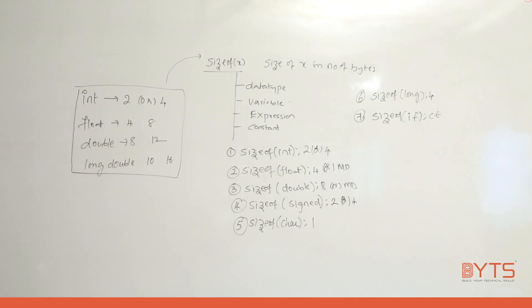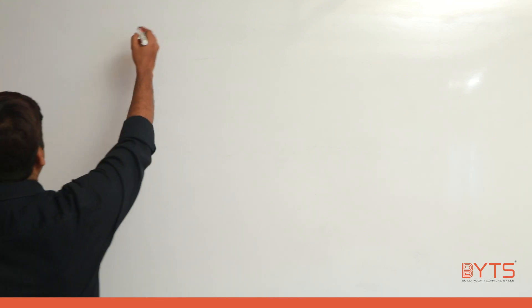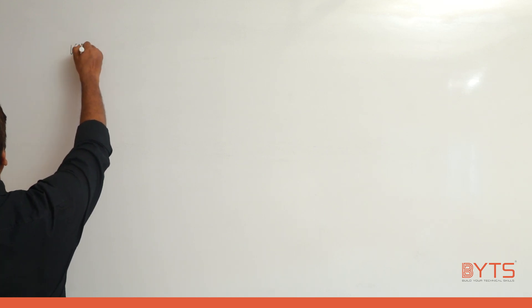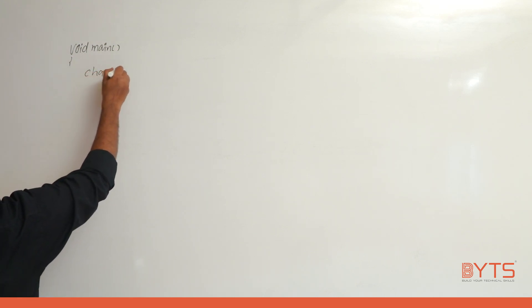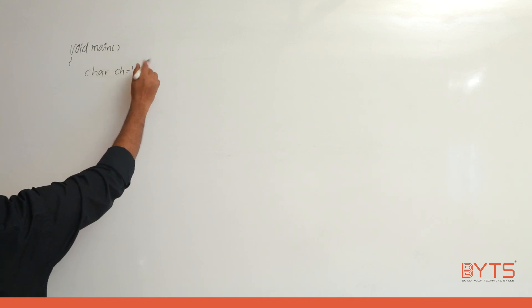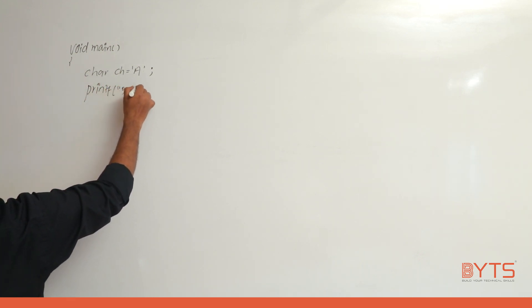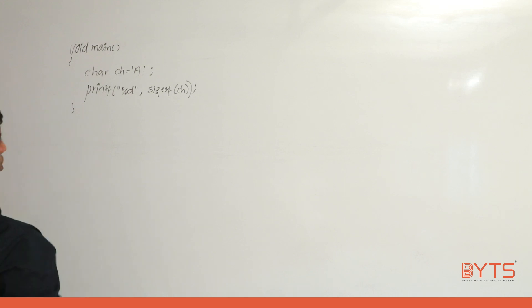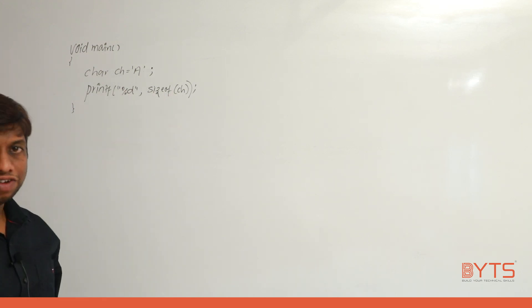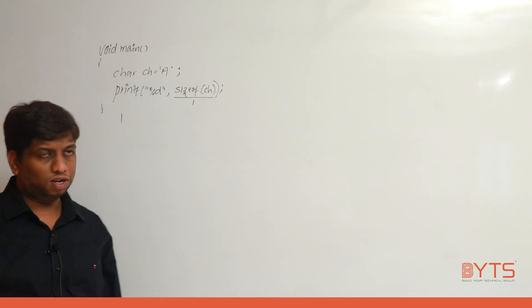Now that data types are covered, let's look at variables. Consider: void main() { char ch = 'a'; printf("%d", sizeof(ch)); }. ch is of character type, and the size of char is 1 byte, so sizeof(ch) is replaced with 1. The answer is 1.